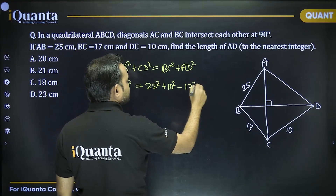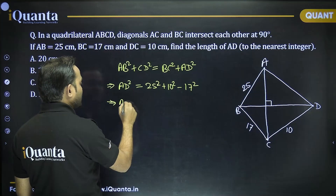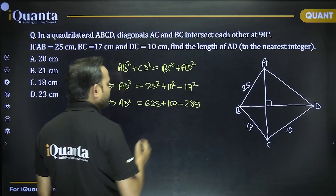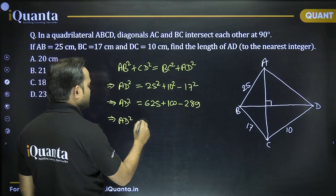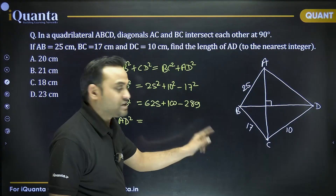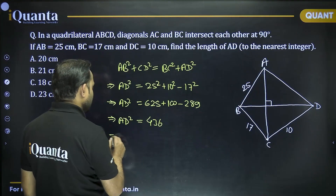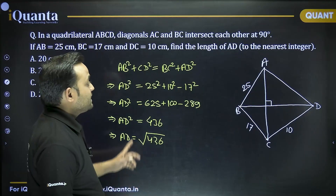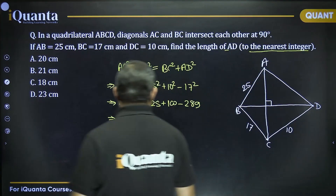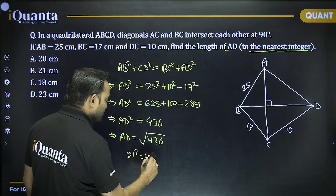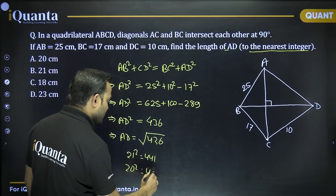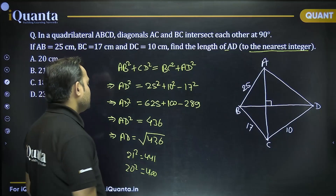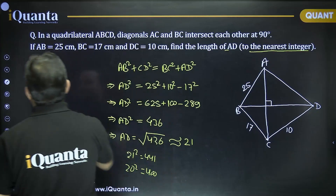So AD² = 625 + 100 − 289 = 725 − 289 = 436. Therefore AD = √436. Since 20² = 400 and 21² = 441, we see that √436 is closer to 21 than to 20. So the length of AD to the nearest integer is 21, and our answer is option B.